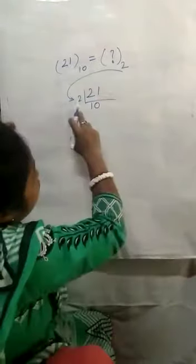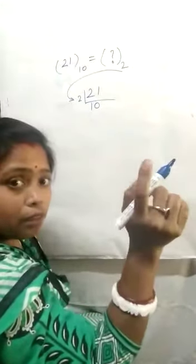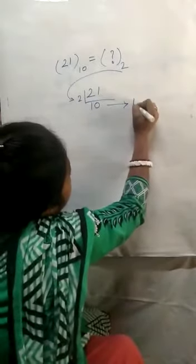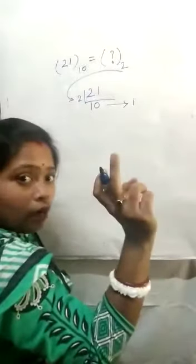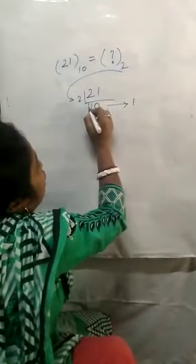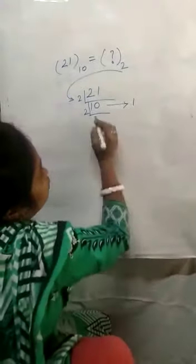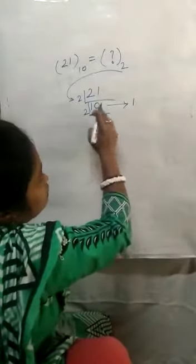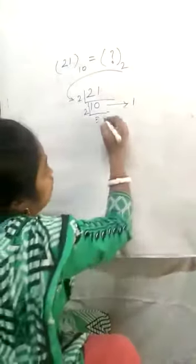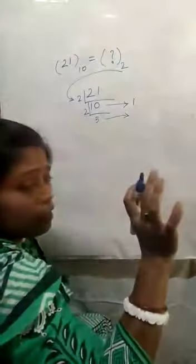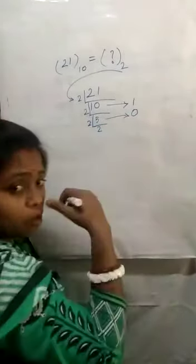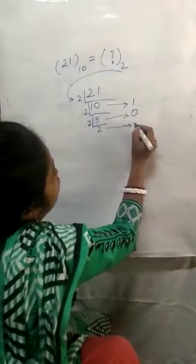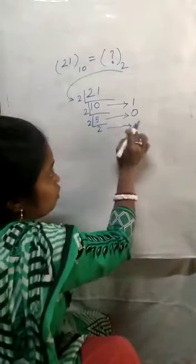Now divide 10 by 2 again. 2 goes into 10 five times — 2 fives are 10. There is no remainder, so write 0. Now divide 5 by 2. It goes 2 times — 2 twos are 4. But there is 5, so the remainder is 1. Now divide 2 by 2. That is 1 time — 2 ones are 2. Is there any remainder? No, remainder is 0.